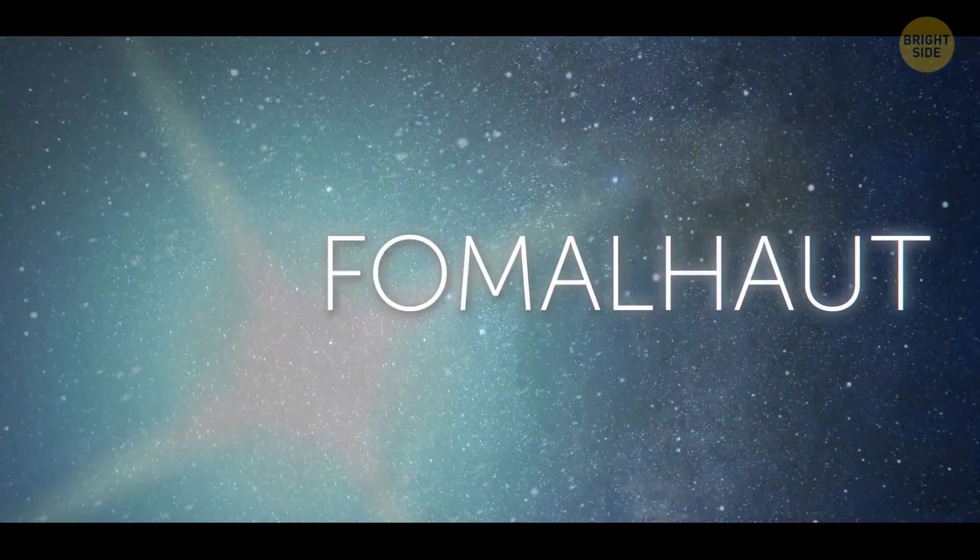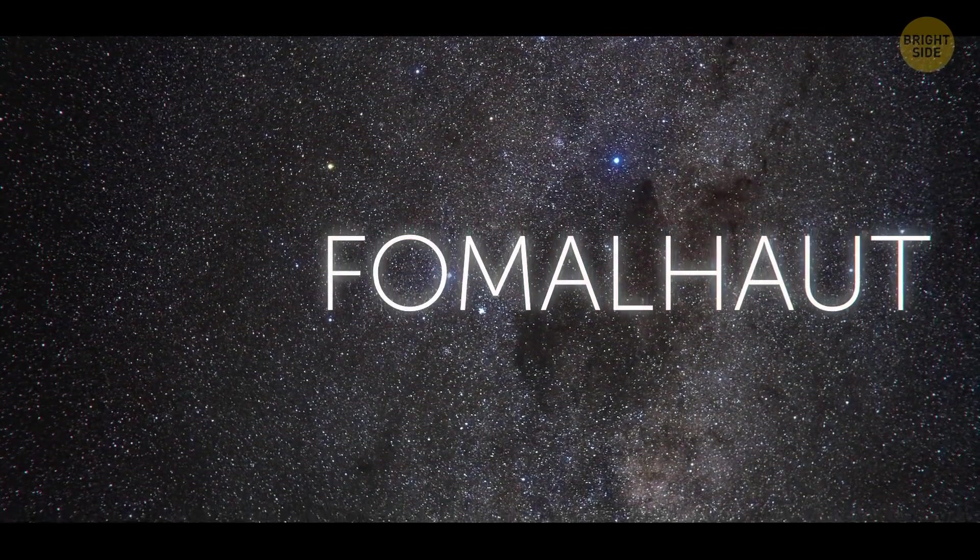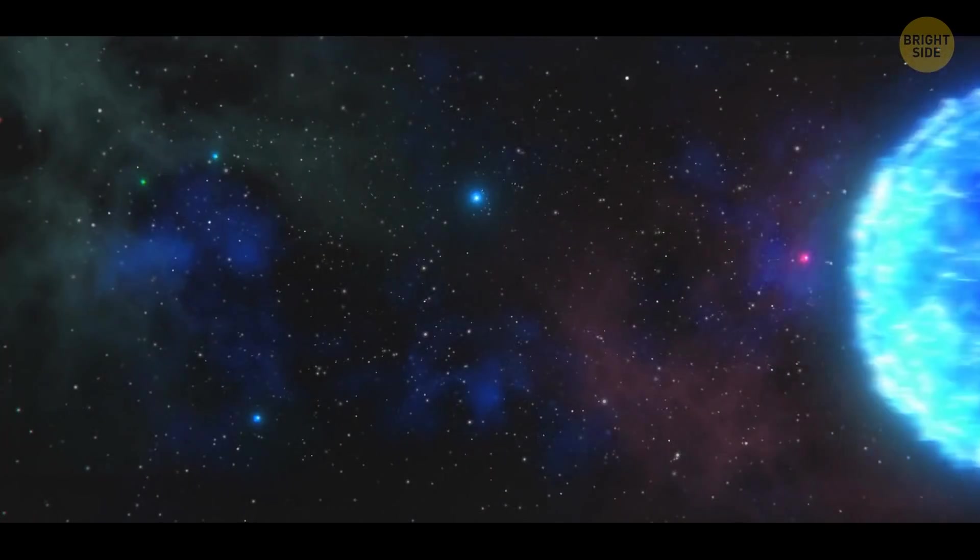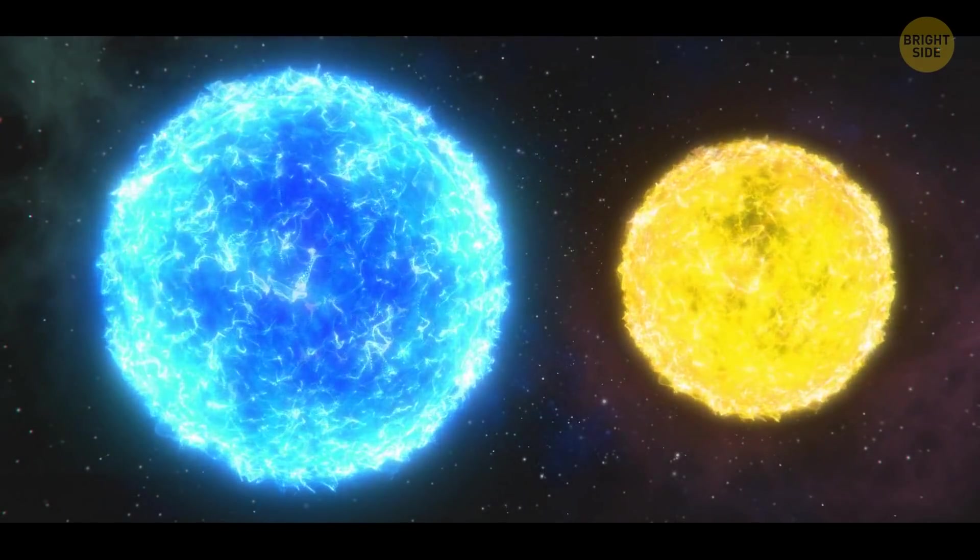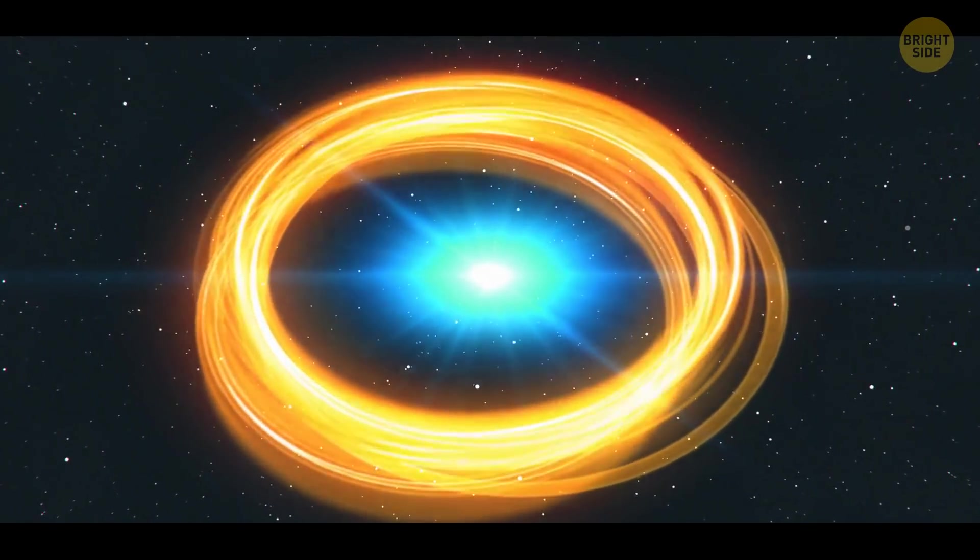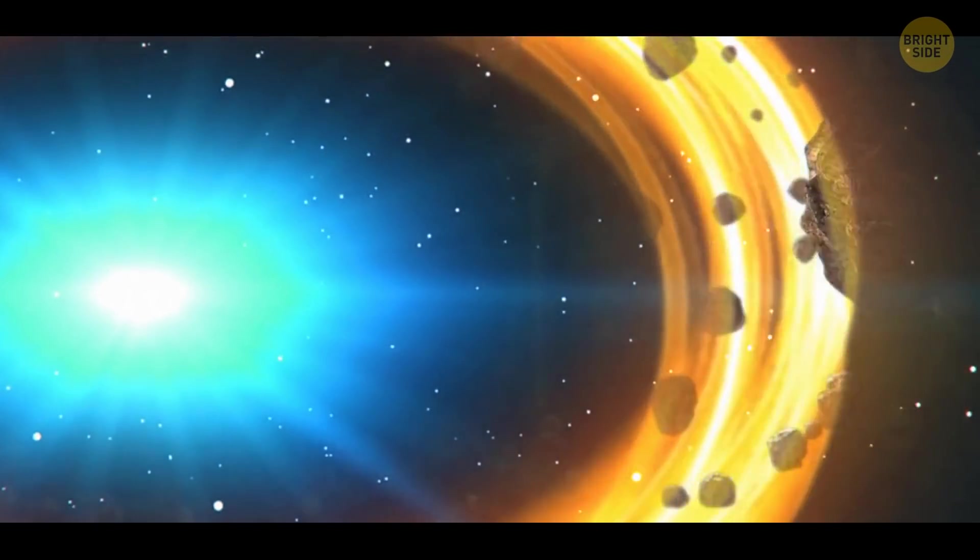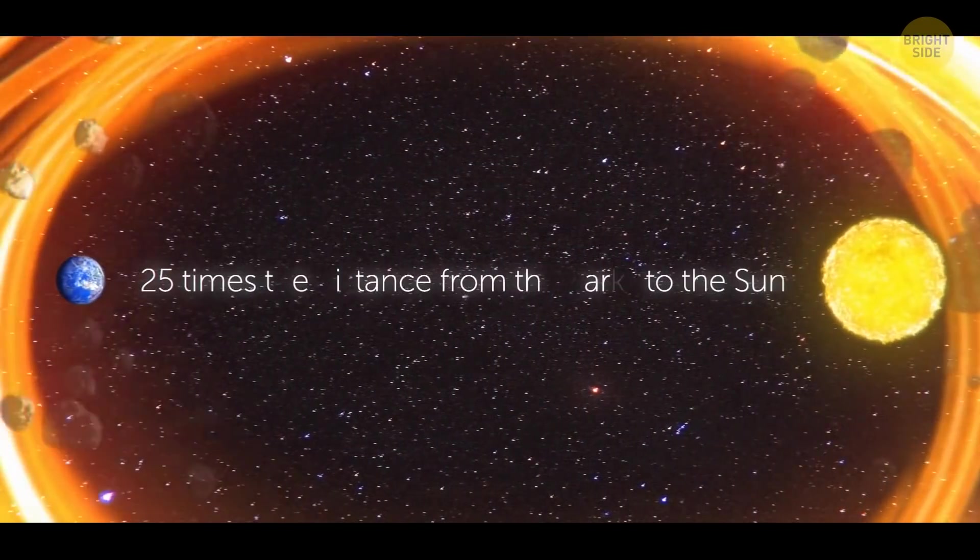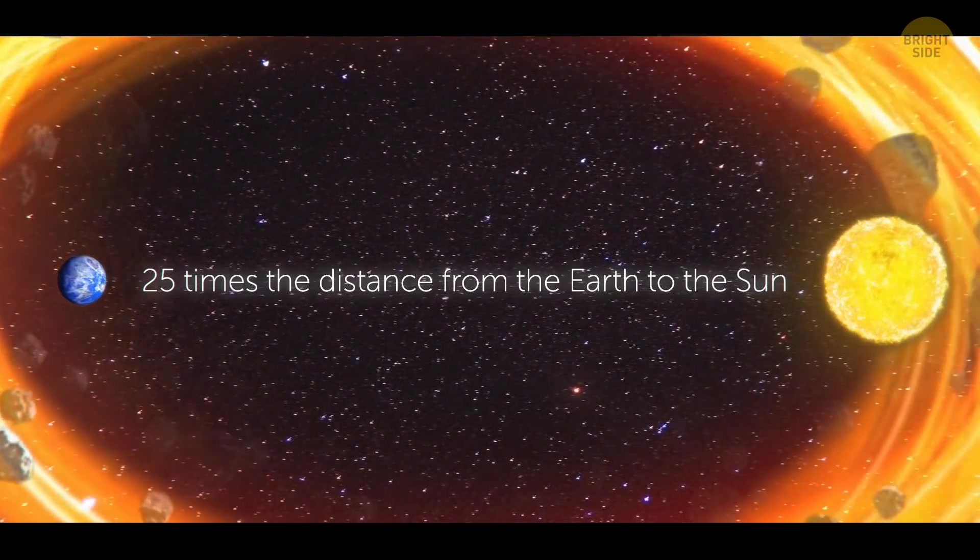But let's travel 25 light-years away to another special star, Fomalhaut. It's one of the brightest stars in the night sky, and it's in the constellation Southern Fish. It's almost twice as big and heavy as the Sun. If you look at it from far away, you can see a bright yellow disk around it. It's a debris disk full of bits of space rock, and it's huge. Its width is about 25 times the distance from the Earth to the Sun.